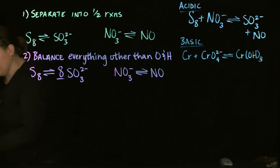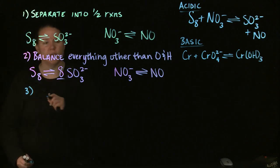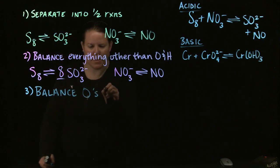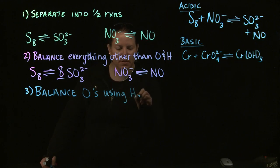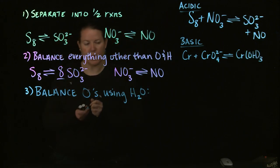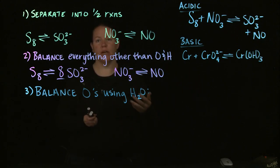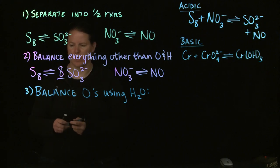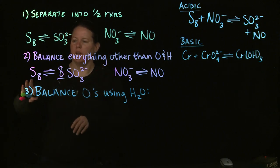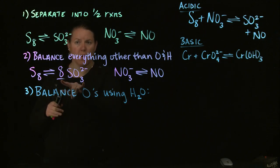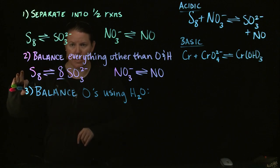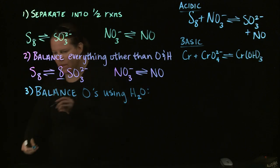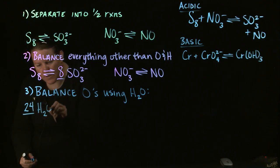Next thing you're going to do is balance O's and then balance H's — first we balance O's. The way we balance O's is we use water. What we do is we add waters to the opposite side of the equation from where the larger number of O's are. So for instance here, there are no O's on this side, but there are 24 O's on this side, which means I need to add waters to this side. Since there's only one O per water, I need to add 24 of them. So I get 24 H2O's plus S8.